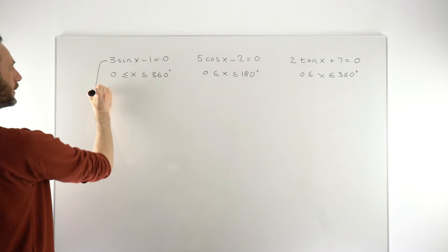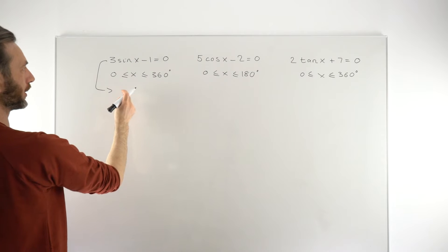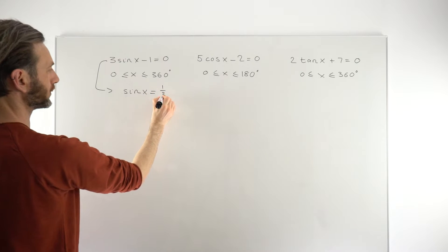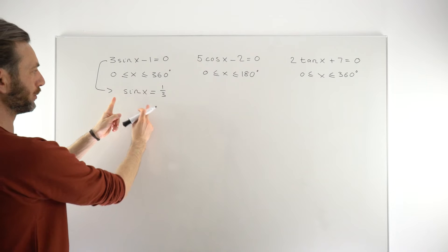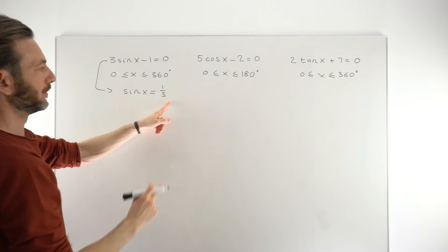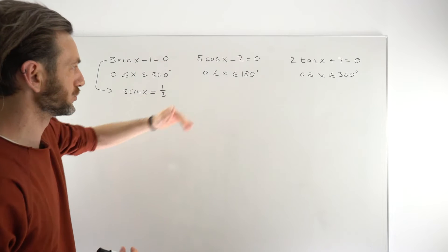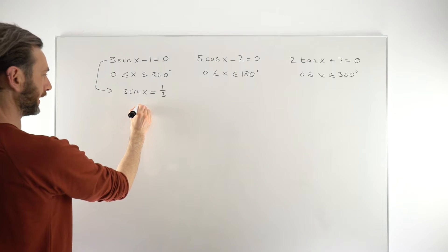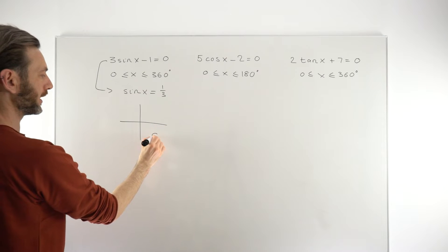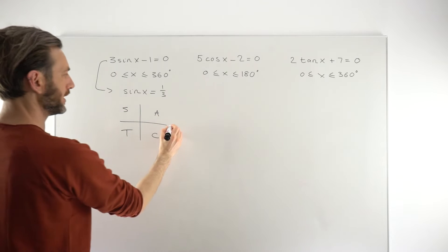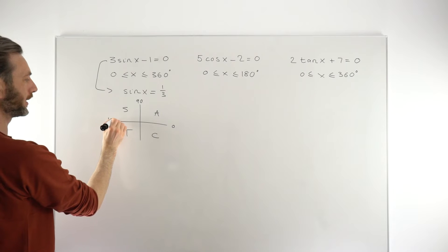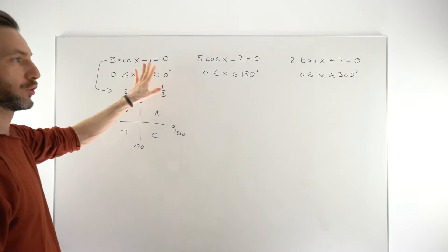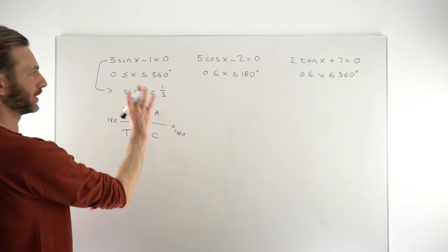We start the first equation by rearranging the algebra — taking the minus one to the other side and then dividing by three, giving sin x = 1/3. That's always going to be your first move with a trig equation: get the trig function on its own, with a number — quite often a fraction — on the other side. At this point you need to fire up a CAST diagram, which tells us where to expect our solutions. These are really, really important — I cannot emphasise enough how important they are.